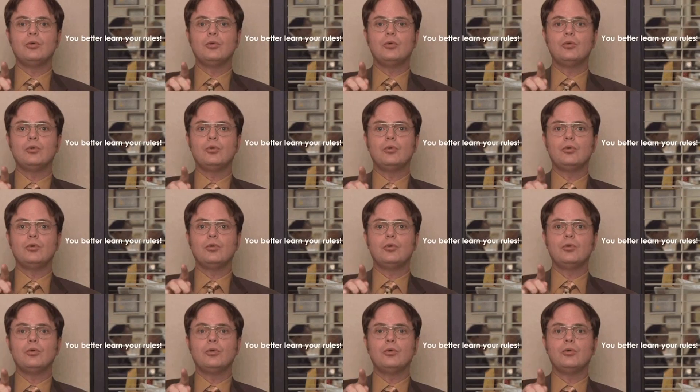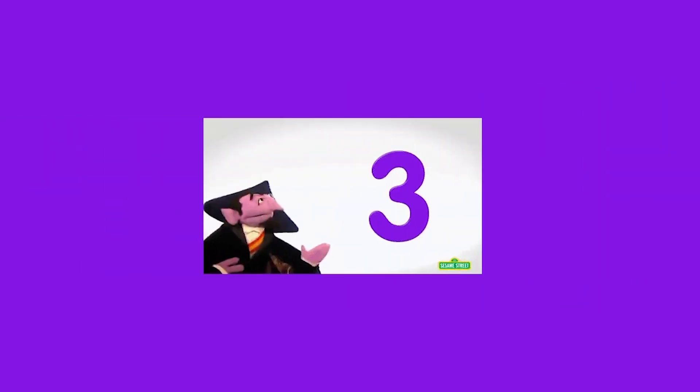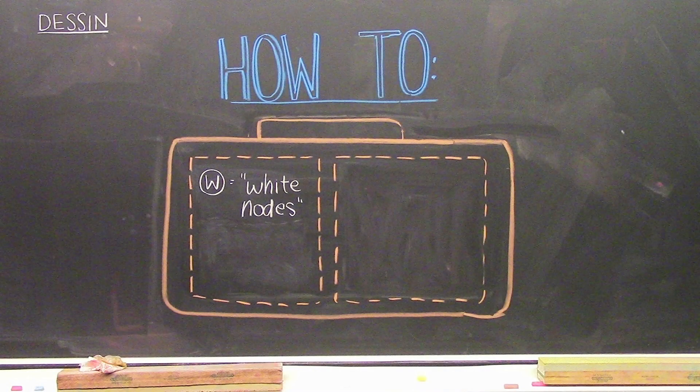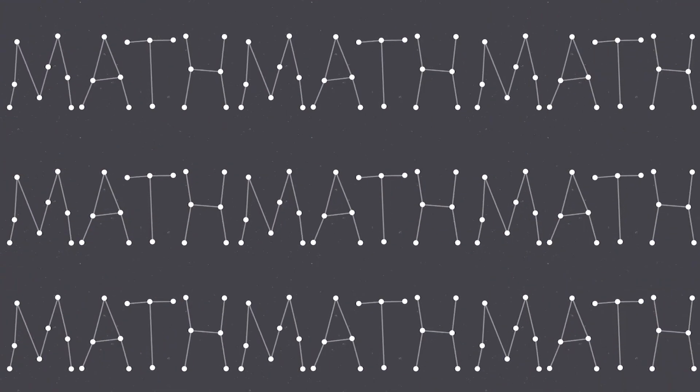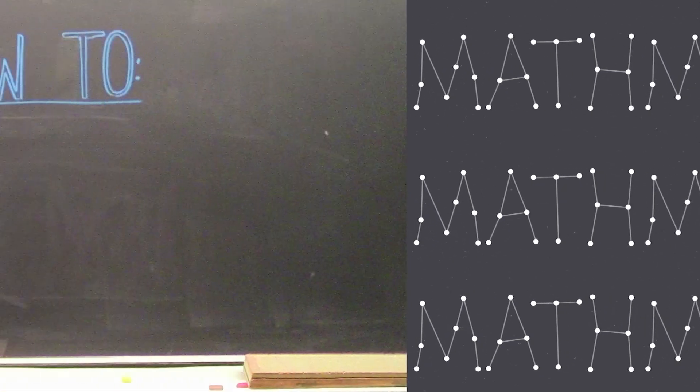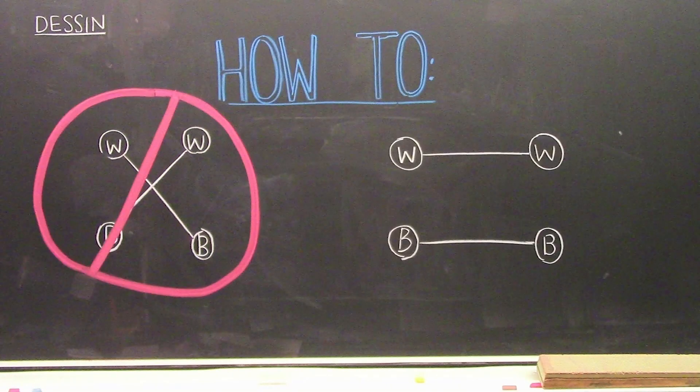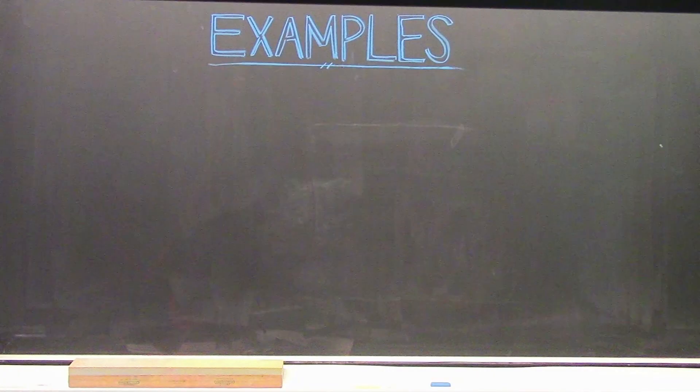There's some rules we have to keep in mind. First, there's only three items in our toolkit. White dots, black dots, and edges that connect those dots. When we connect the dots together, we have to make sure we don't do these three things. Cross edges, connect white dots to white dots, or connect black dots to black dots. We can do this in many ways.